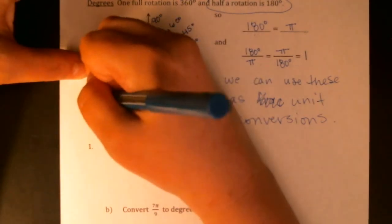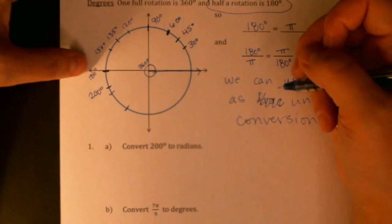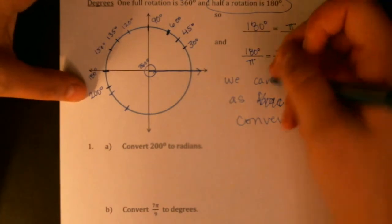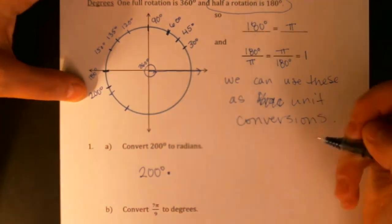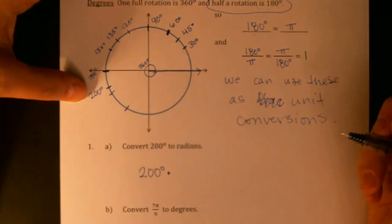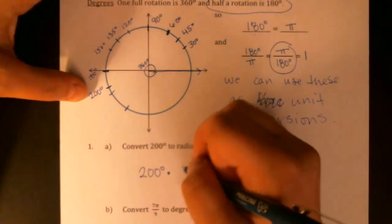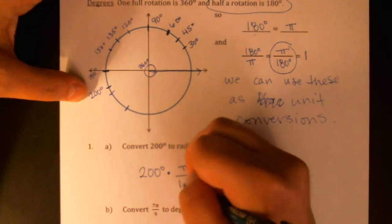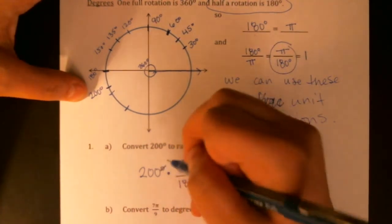So to do the conversion, I would take my 200 degrees and I would say I want to multiply by one. I get my pick of fractions. My goal is to get rid of degrees, so I'm going to use the second fraction, π over 180 degrees. What will happen here is since we have degrees in the top and the bottom, that will cancel out completely.